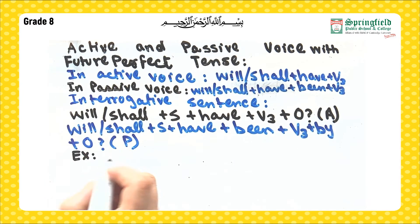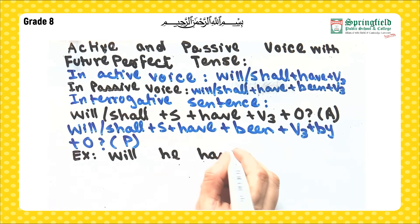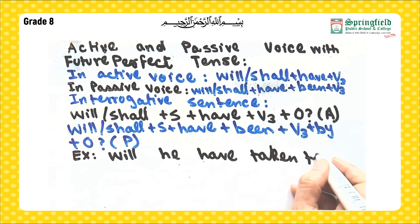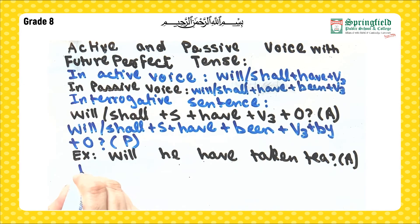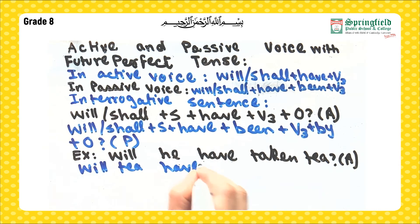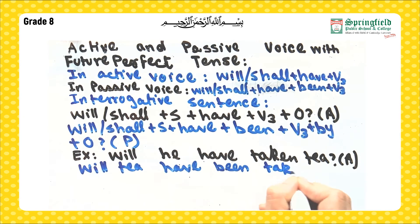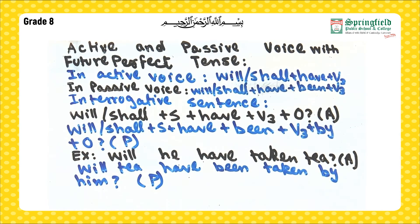Now let's have an example. The sentence is: 'Will he have taken tea?' — this is in active voice. When we change it into passive, it becomes: 'Will tea have been taken by him?' — and this is in passive voice.